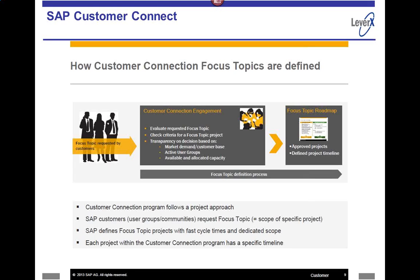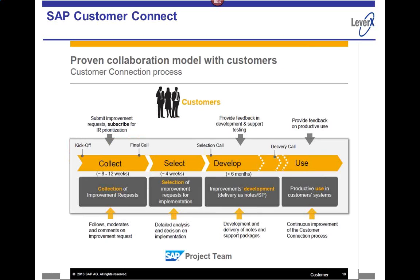Each project connection has a specific time frame. Here's the project timeline — it's basically a four-phase collect, select, develop, use process. In the collection phase, you the customer define a number of functional improvements to the system. These are put together and then go to a selection process, where a quorum of all the companies involved with the customer connect will vote on which new functionality is selected.